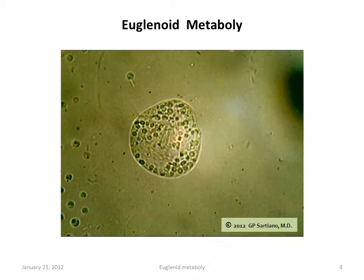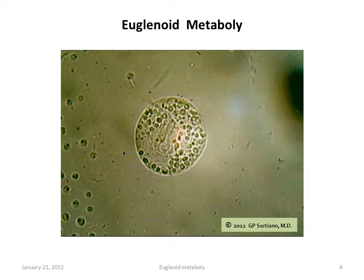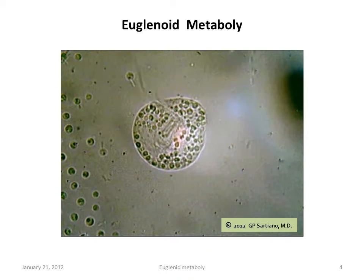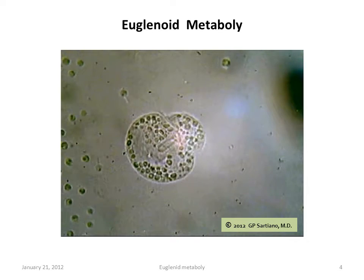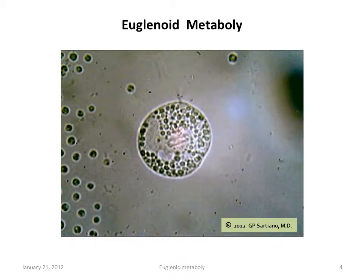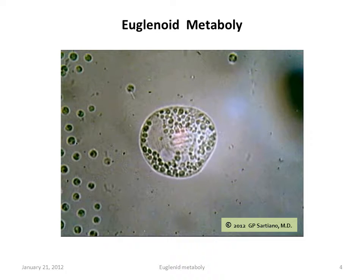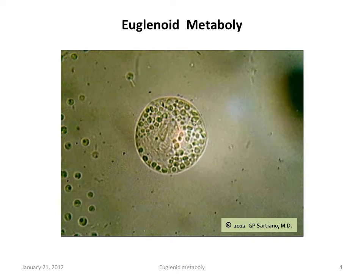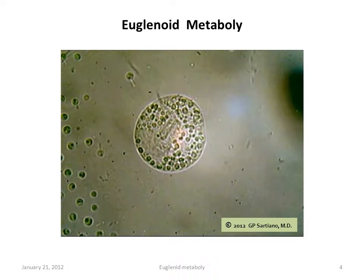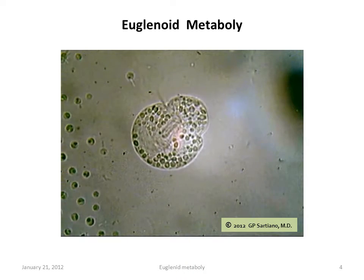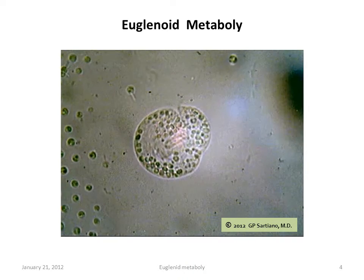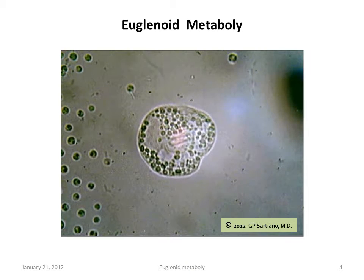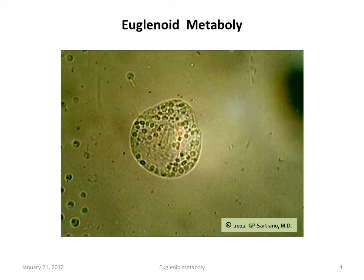It is well known that Peronema has a second flagellum, the recurrent flagellum, which is generally adherent in a groove on its ventral surface. In this video, there is a suggestion that perhaps rarely, during extreme metaboly, this second flagellum becomes sufficiently freed up to become visible as a second motile flagellum.